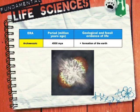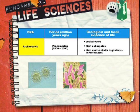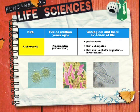As with all geological timescale tables, this table starts with the furthest time in the past and moves gradually towards the present. The first era is the Archeozoic era, which took place about 4,500 million years ago. During this era, the Earth was formed. The first period that we specify within the Archeozoic era is the Precambrian period, which happened between 4,500 to 2,500 million years ago. Geological and fossil evidence of life during that period includes prokaryotes, the first eukaryotes, and the first multicellular organisms, specifically the invertebrates.